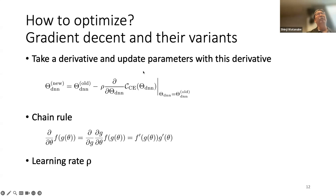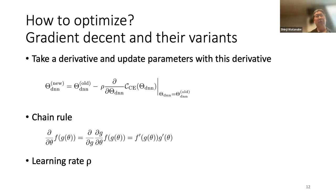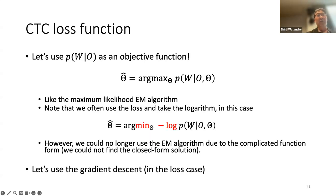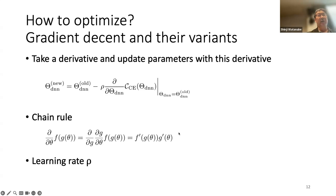The EM algorithm uses an auxiliary function and indirectly optimizes the parameter. But gradient descent directly uses the loss function, takes the gradient, updates the model, and repeats this process again and again.